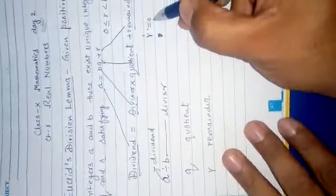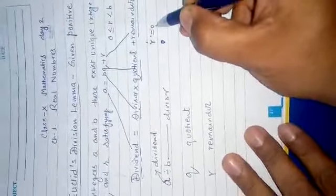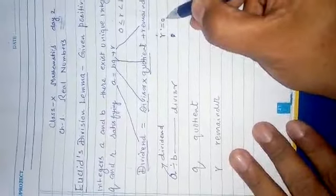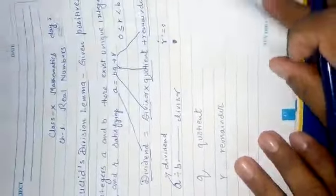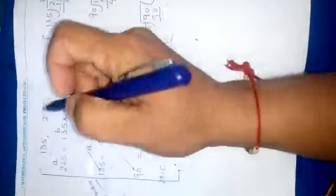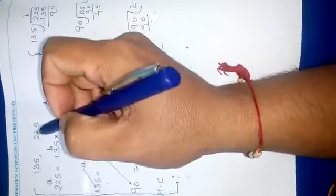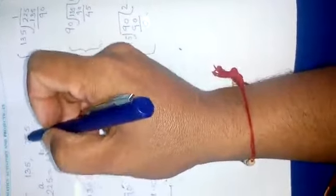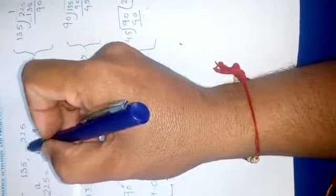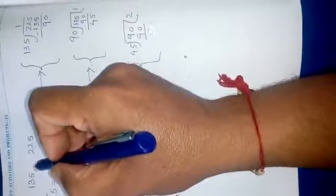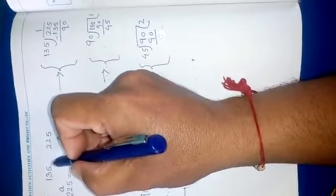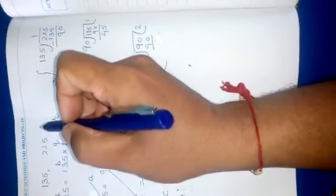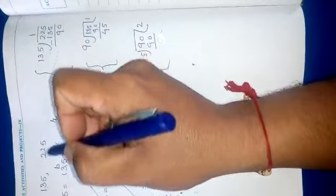r is either 0 or greater than 0, but always less than the divisor. Now, Euclid's Division Algorithm is used to find out the HCF of two or more than two integers.